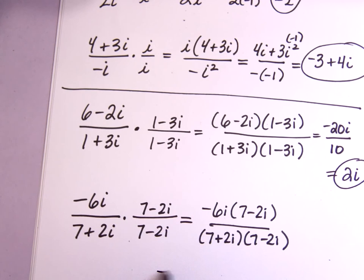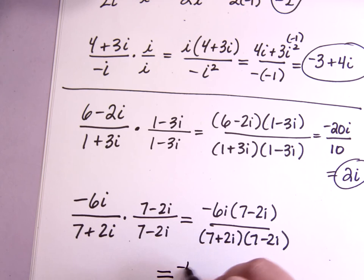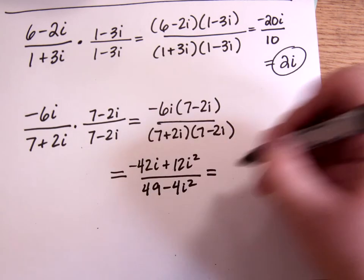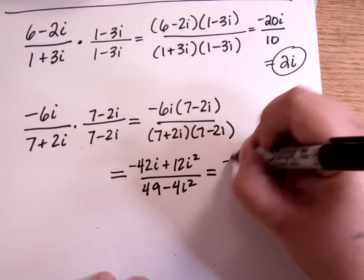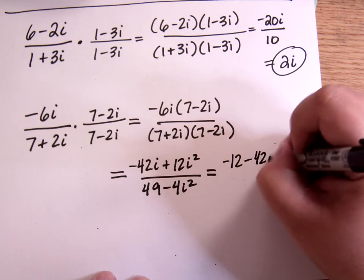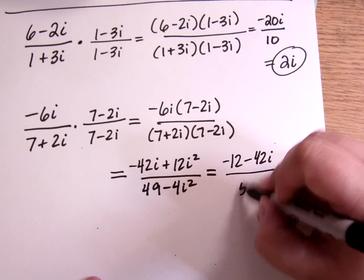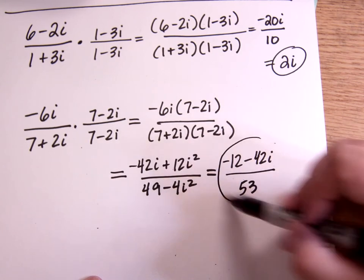This one is going to be, let's see, I'll just go ahead and do this one. On top, sorry, I'm so weirdly angled here. On top, this turns into a negative 1, so we have negative 12 minus 42i. And on the bottom, this turns into plus 4, so this is a 53, and that does not simplify. And that's my final answer.